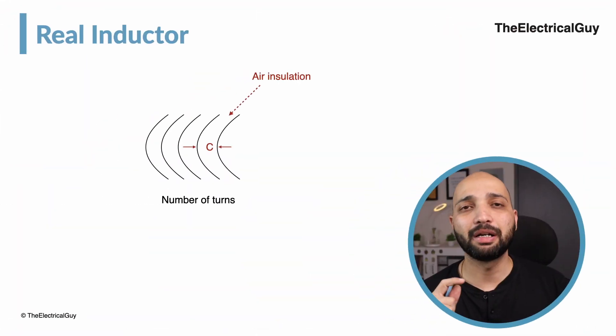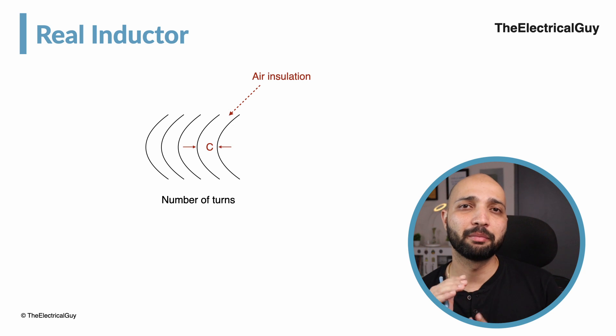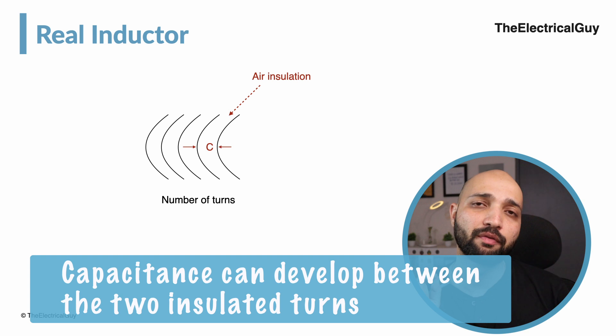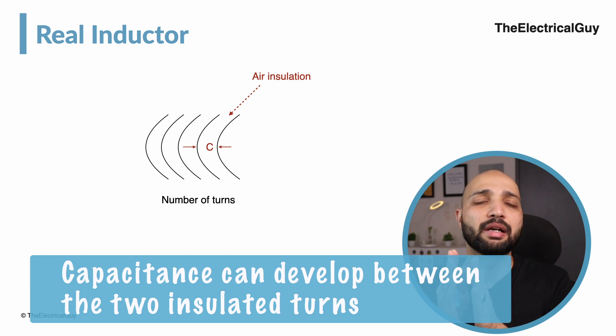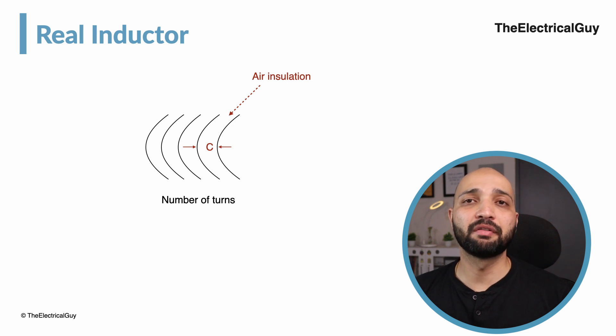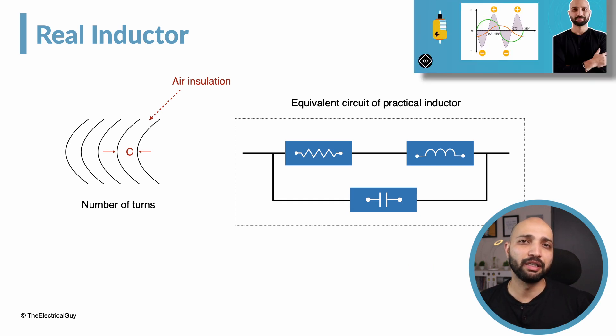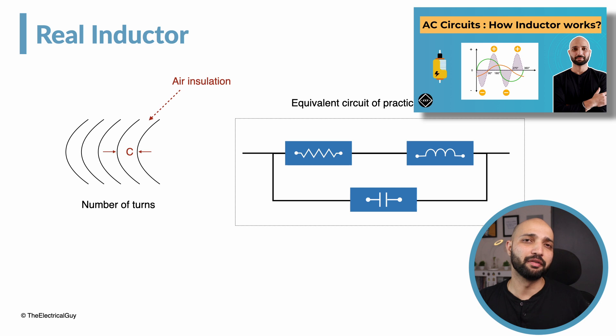Another problem with a practical inductor is that the multiple turns of wire are separated from each other by some electrical insulation including air, and here we have the potential for capacitance to develop between the two insulated turns. In such a case, the practical equivalent circuit of an inductor will look like this, and the inductor will not behave similarly to the ideal behavior we have seen in this video.